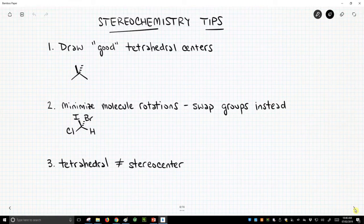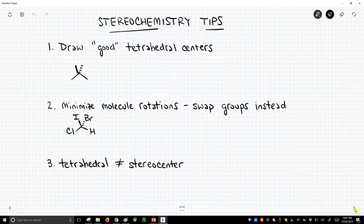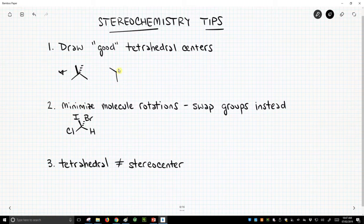So what's my first tip? Draw good tetrahedral centers. This is meant to be a good tetrahedral center. Tetrahedral centers have two bonds that are within the plane of the writing surface, one coming out of the plane, that's our wedge, and the other one going back in, that's our hash bond. Of course, they don't have to be drawn exactly like this. They can be rotated in different ways as long as we have two bonds within the plane of the surface and one going into the hash and one coming out of the plane.